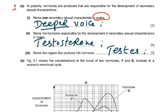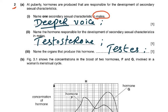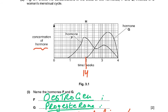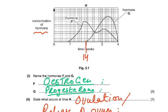Name the hormone responsible for the development of secondary sexual characteristics in males: that's testosterone. Name the organ that produces it: the testes. Figure 3.1 shows the concentration in blood of two hormones F and G involved in a woman's menstrual cycle, which lasts 28 days. Day 14 is when ovulation takes place. Name hormones F and G: F is oestrogen, G is progesterone — these are underlined, meaning they are essential marking scheme points.